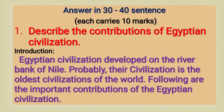Part 2: Answer in 30 to 40 sentences. Each carries 10 marks. One long answer question is explained relating to Egyptian civilization. Describe the contributions of Egyptian civilization. Introduction: Egyptian civilization developed on the river bank of the Nile. Probably their civilization is the oldest civilization of the world.